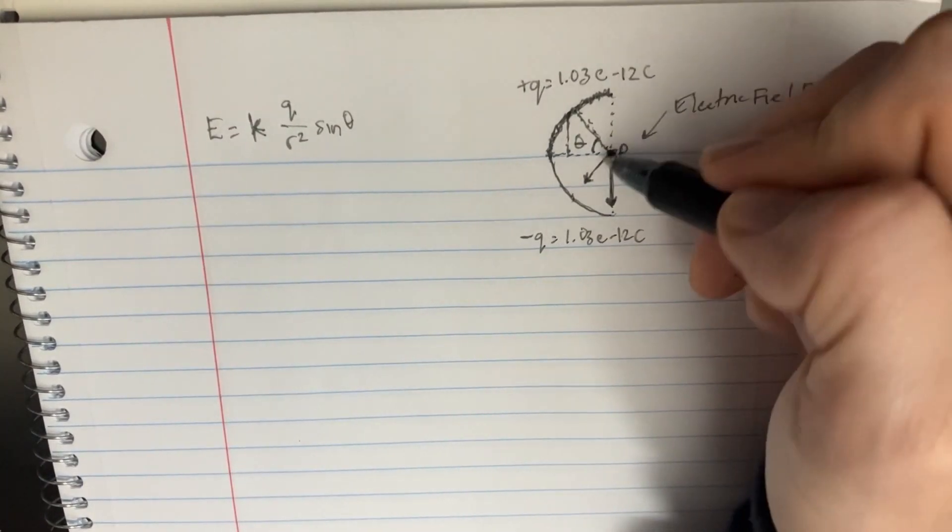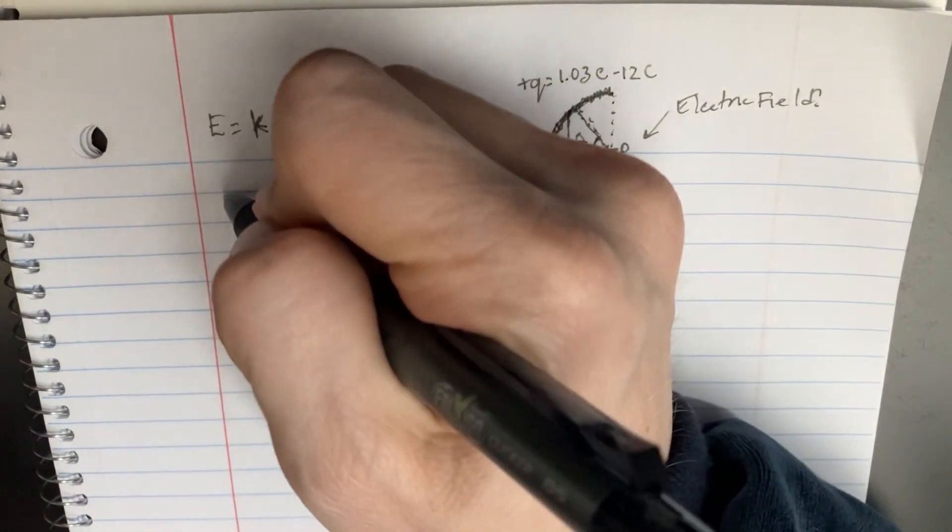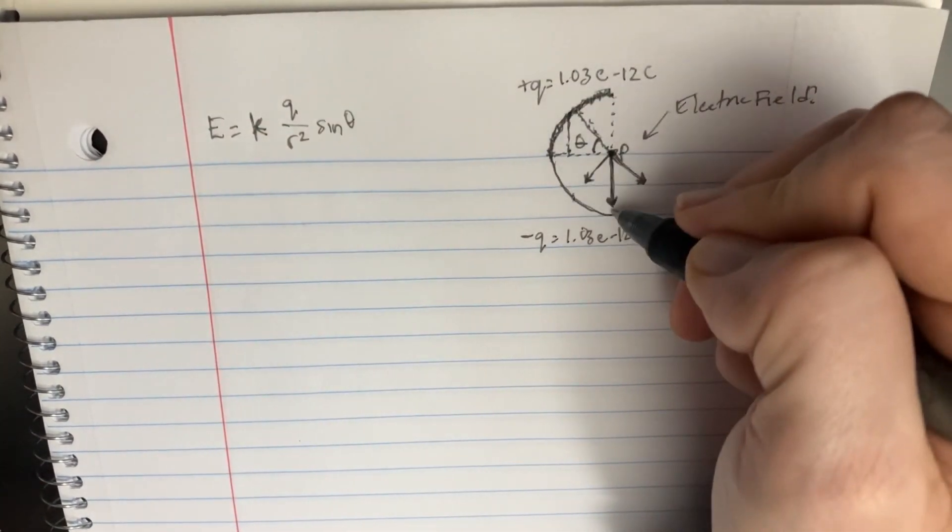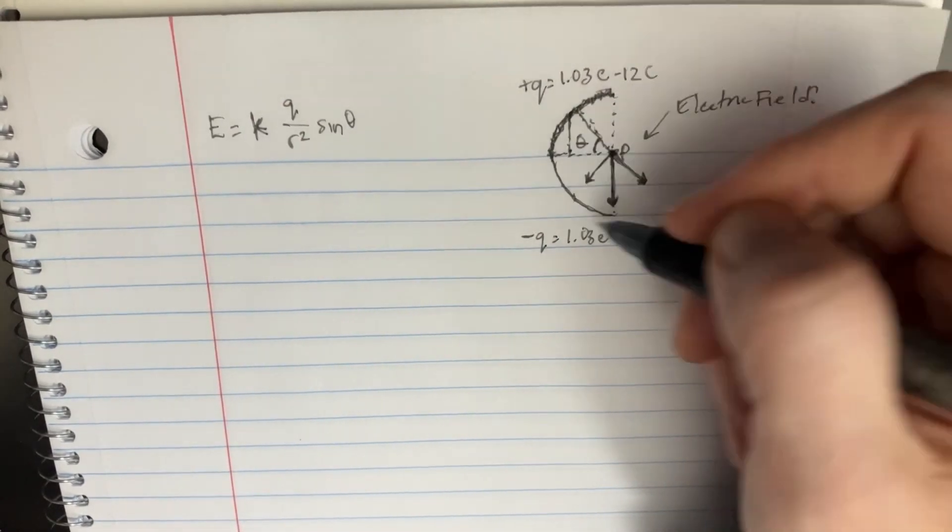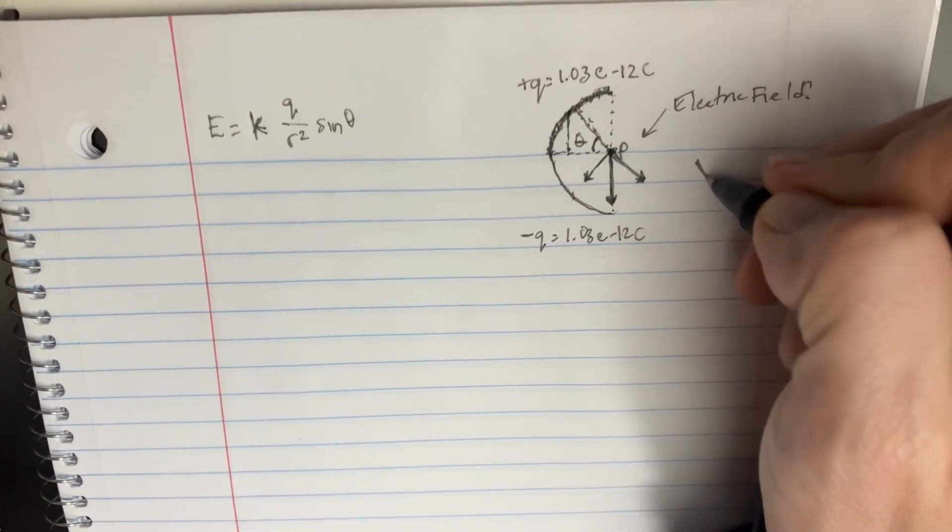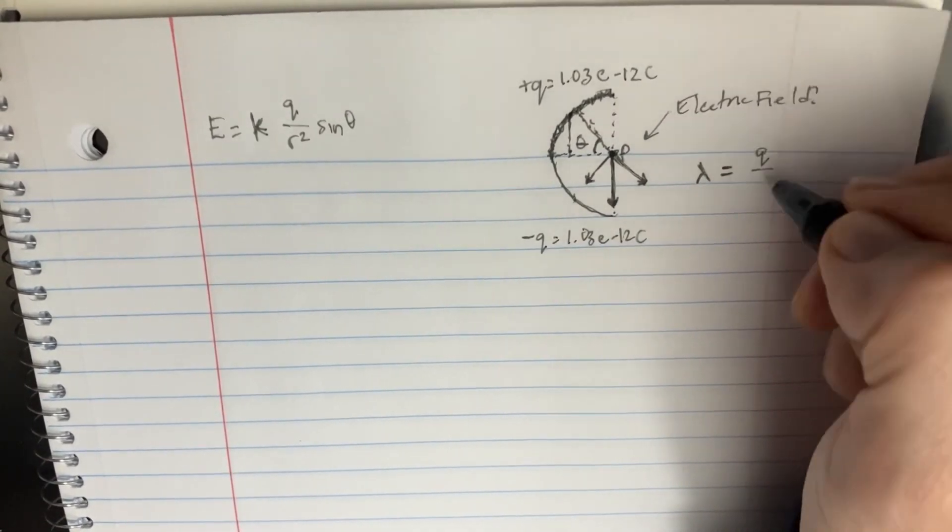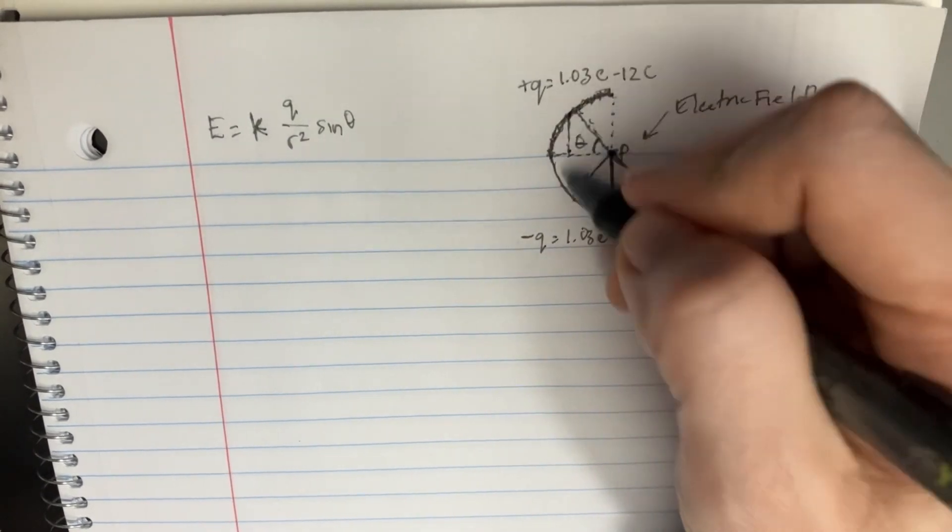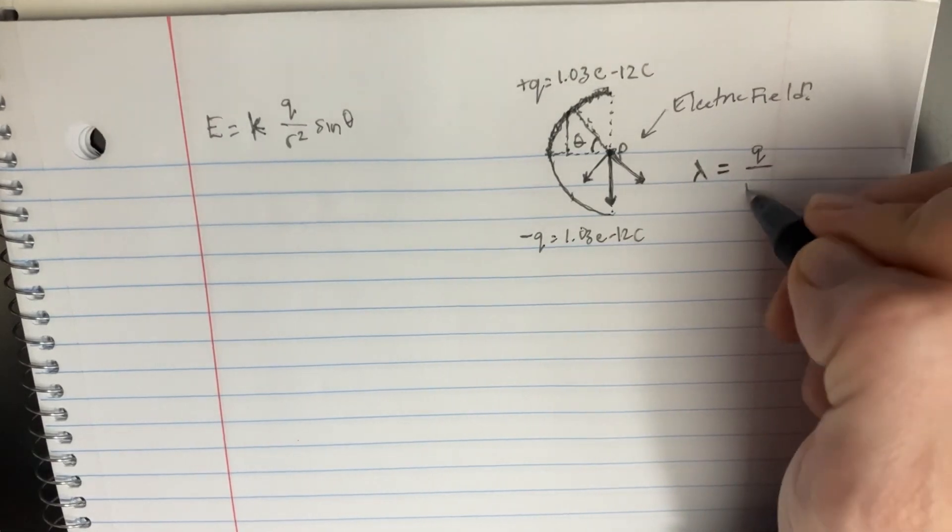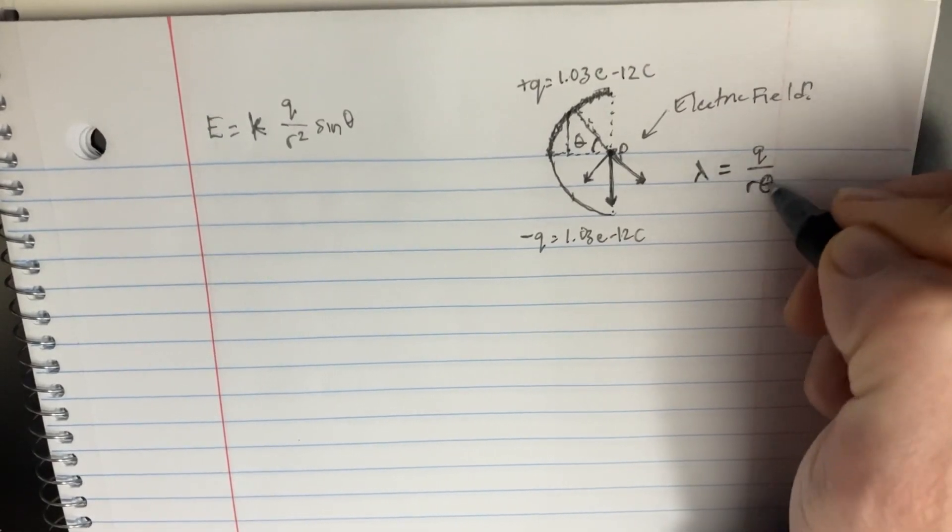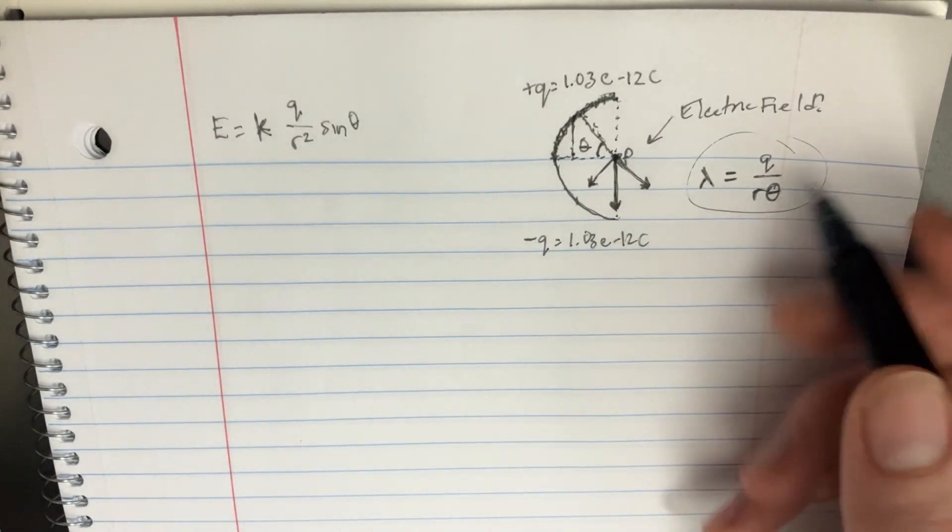So now we can think to ourselves, let's try to set up the integral. We know that this is a linear thing. There's no area, there's no volume, it's just lambda. And lambda is supposed to be equal to Q over L, but L for a semicircle or a circle, L is R theta, right? S equals R theta. So we're going to put R theta down here. And so this is kind of what we want to be thinking about in terms of the situation.